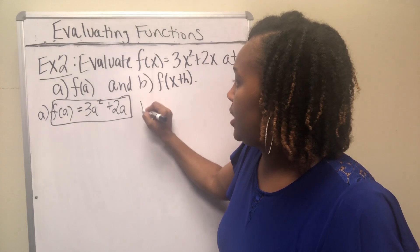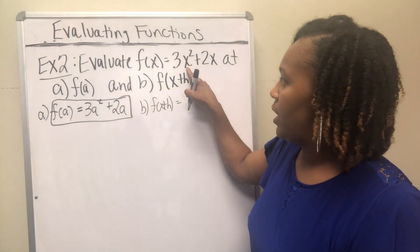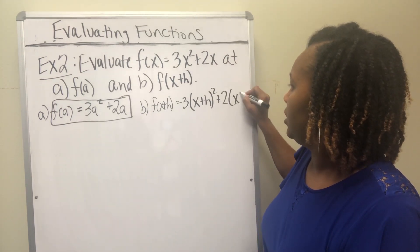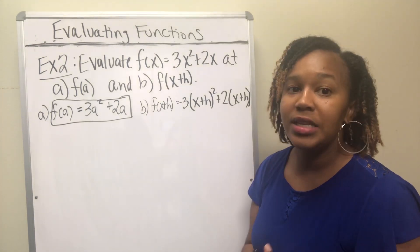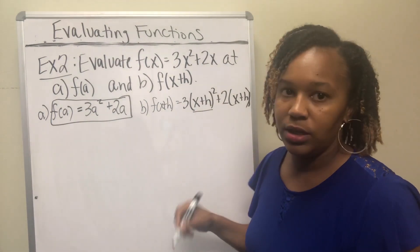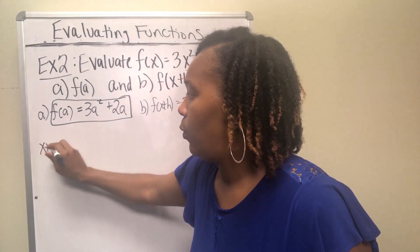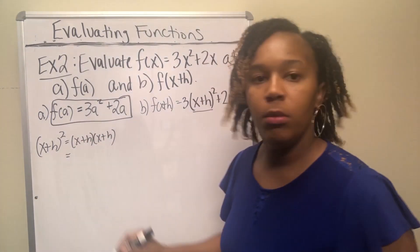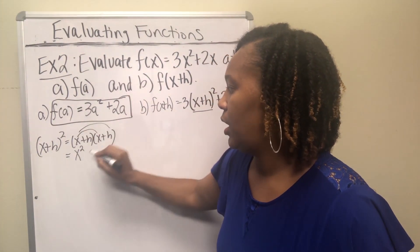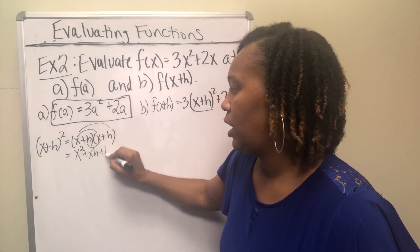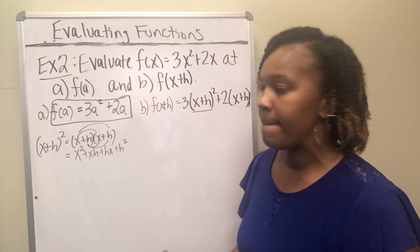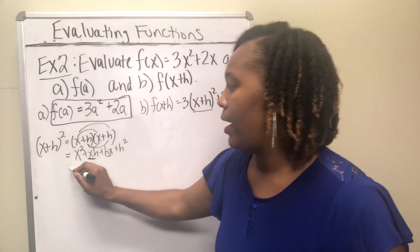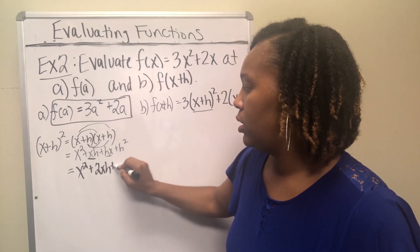For part B, f of x plus h — replace every x with x plus h. So x squared becomes x plus h squared, and the 2x term becomes 2 times x plus h. Now work out what x plus h squared equals: that's x plus h times x plus h. Multiplying out gives x squared, plus xh, plus hx, plus h squared. Since multiplication is commutative, xh and hx are the same and can be combined, giving x squared plus 2xh plus h squared.